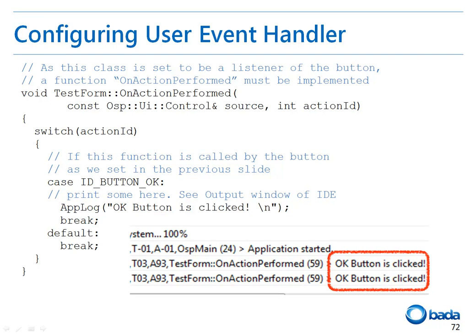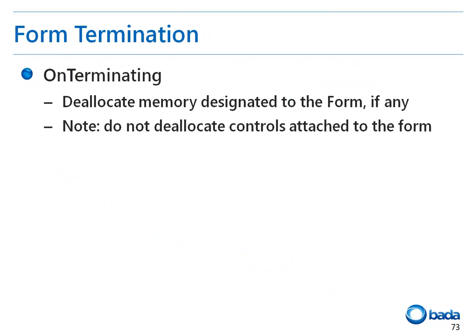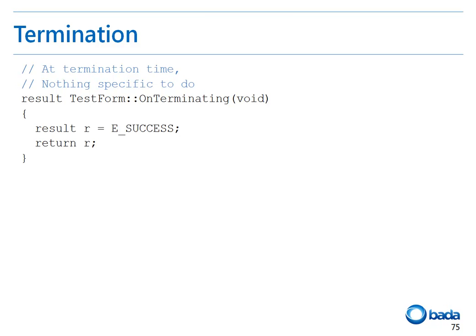Therefore, if the user runs the application and presses the OK button, the message 'OK button is clicked' will appear in the log window. If the form is hidden on the screen, the form's onTerminating function is called. The onTerminating function generally frees the resources allocated when the form is initialized. Note that the developer must not free any of the sub controls attached to the form, because they are automatically released when the form is released. In this example, the onTerminating function only contains code to return success because the form didn't allocate any memory.